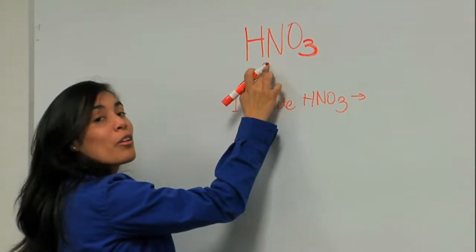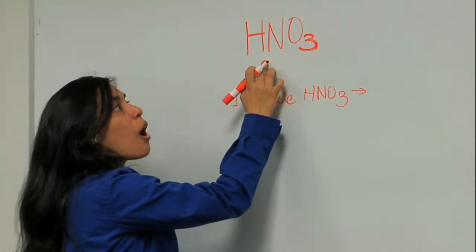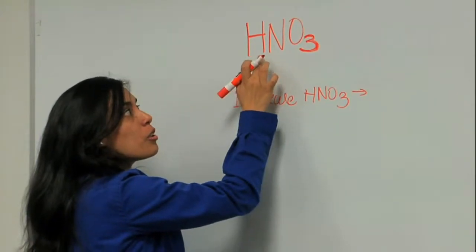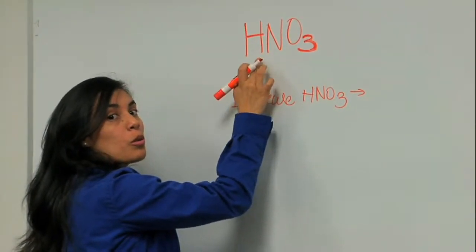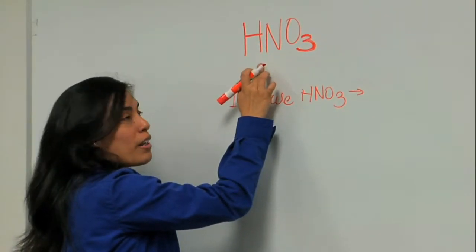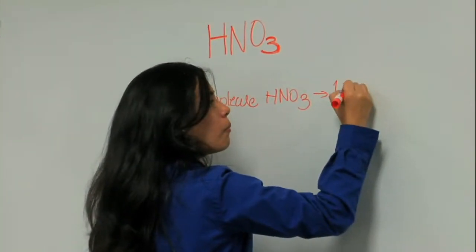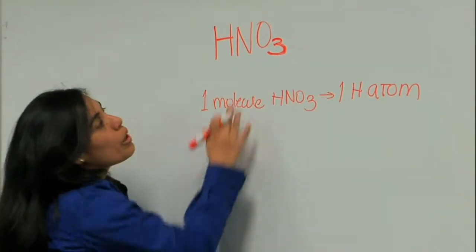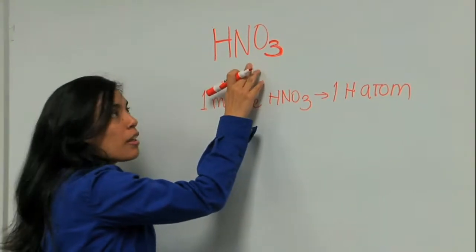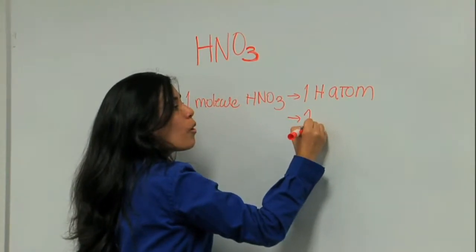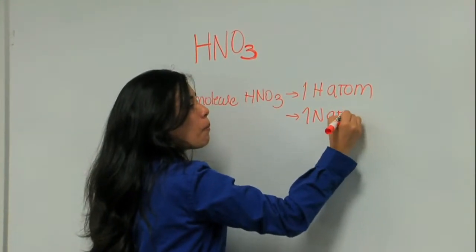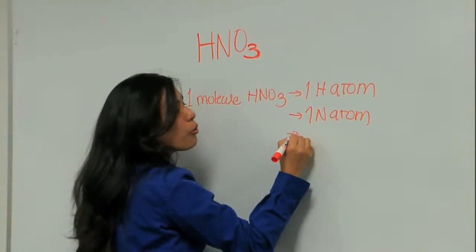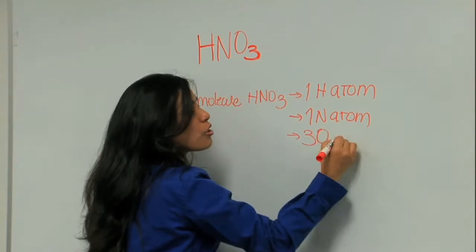Remember that the subscript tells us how many atoms of each we have. In the case of hydrogen, I have no subscript. No subscript means one, so I have one hydrogen atom. What about nitrogen? No subscript again, so I have one nitrogen atom. And for oxygen, I have three as a subscript, so I have three oxygen atoms.